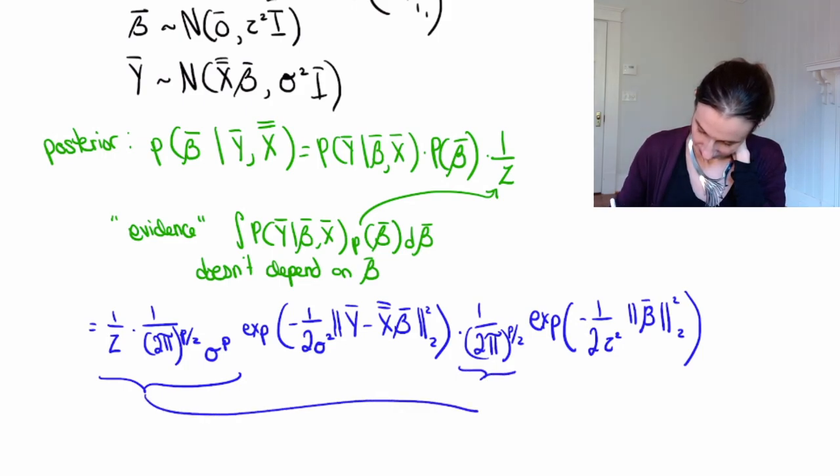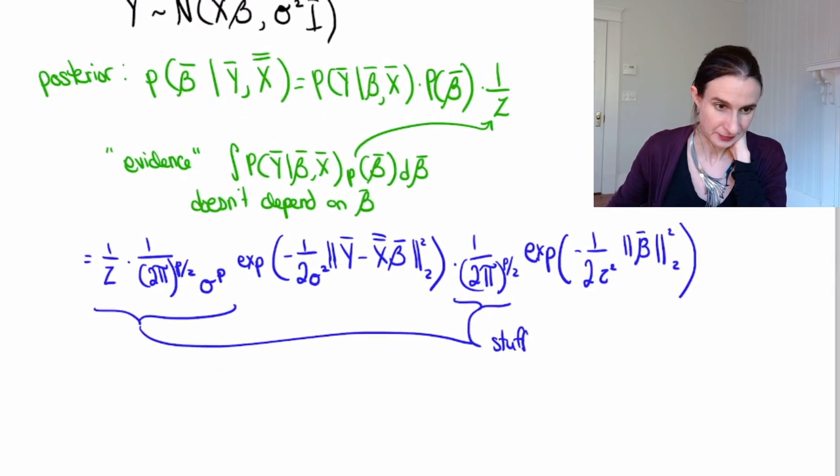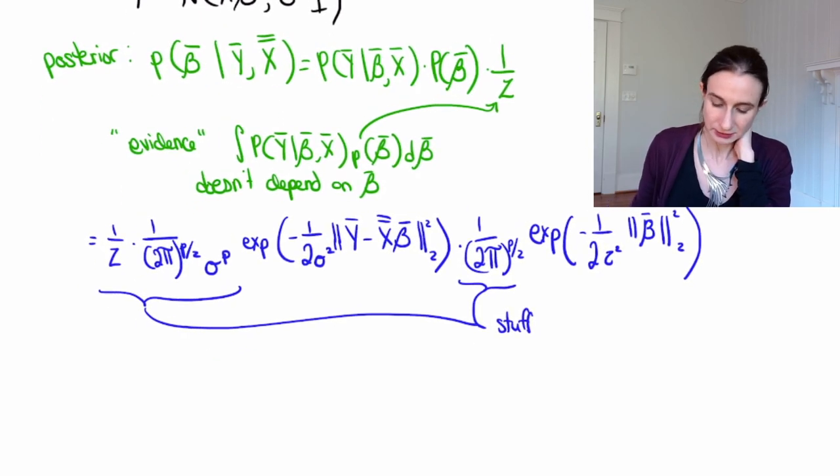Okay, now there's a bunch of terms here that don't actually depend on beta, and luckily we can just lump those into one big constant blob. Let's just show you where those are. Okay, so I'll just write here. These are just...this is just stuff. This is some, like, constants. I don't really need those.